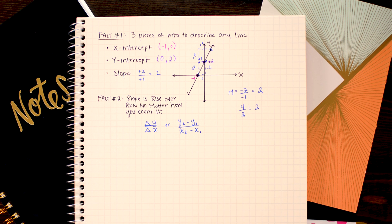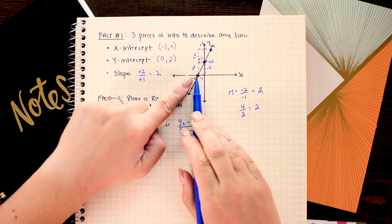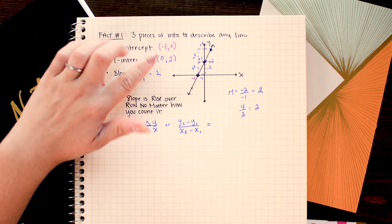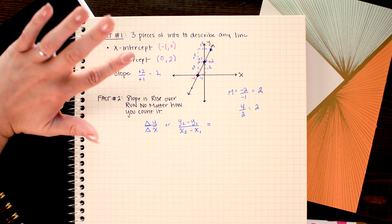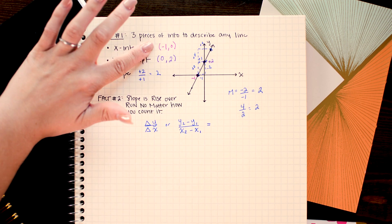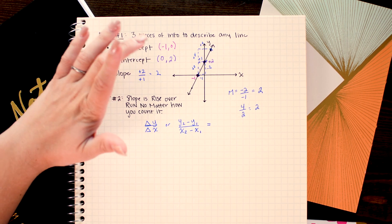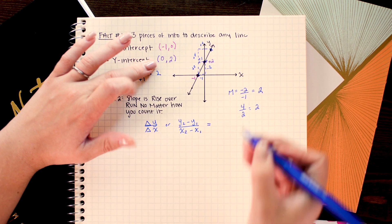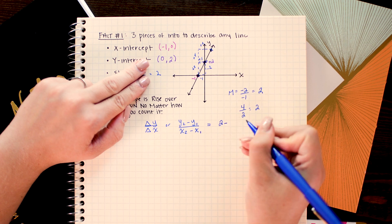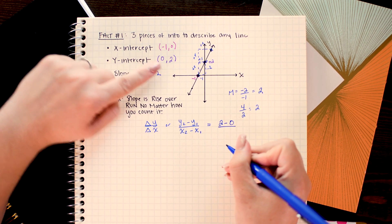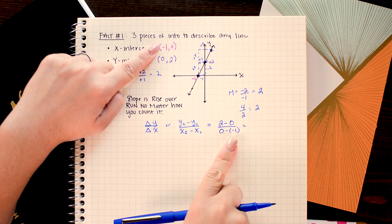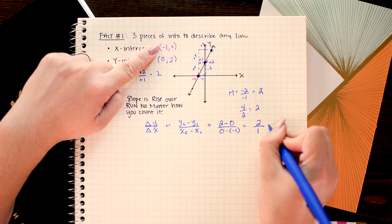And we could also just do this if we only have the coordinates. So say we had the point negative 1, 0 and 0, 2 and we want to calculate the slope from that. To do that I'm going to take the difference in y's. Now it doesn't matter which point I use as the x1, y1 and x2, y2. I could use this as the first point or this one. I'm going to go ahead and just use this as the first point and this is the second point. So y2 is 2 minus y1 which is 0 over x2 which is 0 minus x1 which is negative 1. Do a little arithmetic here and we get 2 over 1 which is 2.